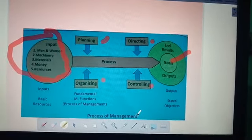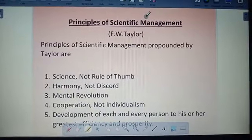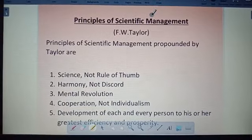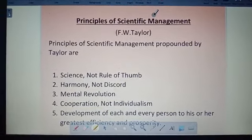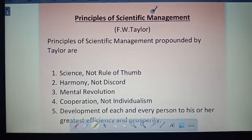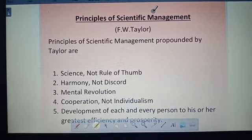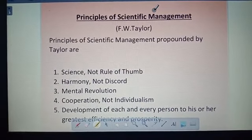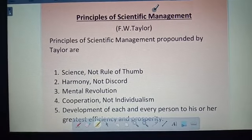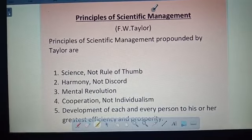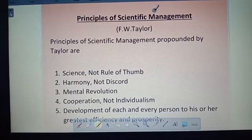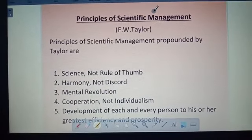Now let us understand the principles of scientific management given by F.W. Taylor. Before introducing these principles to the world, Taylor himself worked in a steel company for many years, experimenting and analyzing everything. He then gave five principles: science not rule of thumb, harmony not discord, mental revolution, cooperation not individualism, and development of each and every person to his greatest efficiency and prosperity.